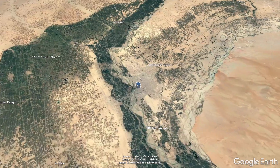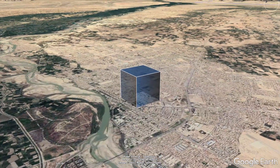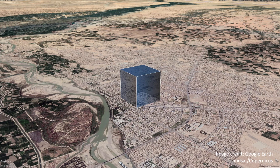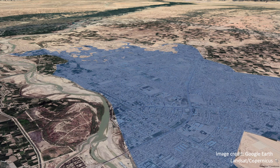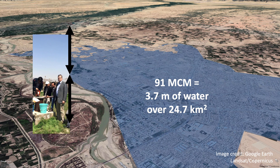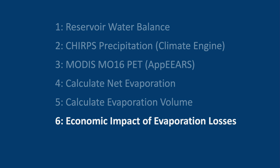Let's go to Lashkar Gah City, which is on the Helmand River downstream of the Kajaki Reservoir. The blue cube represents the estimated net amount of water lost to evaporation in water year 2019 from the Kajaki Reservoir. 91 MCM is a cube of water approximately 450 by 450 by 450 meters in size. If we let this water flood the entire city of Lashkar Gah, the city would be covered by 3.7 meters of water — that's twice my height. Clearly, this is a lot of water lost to evaporation.